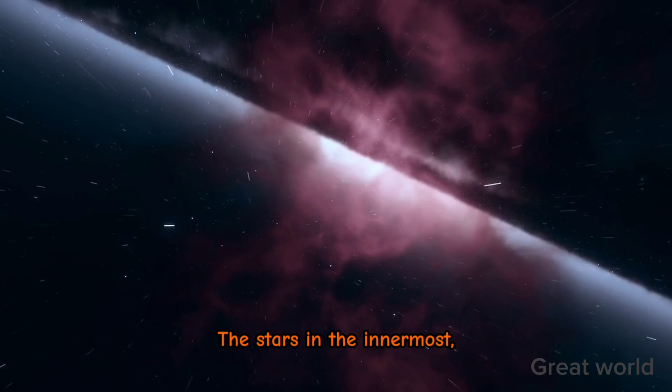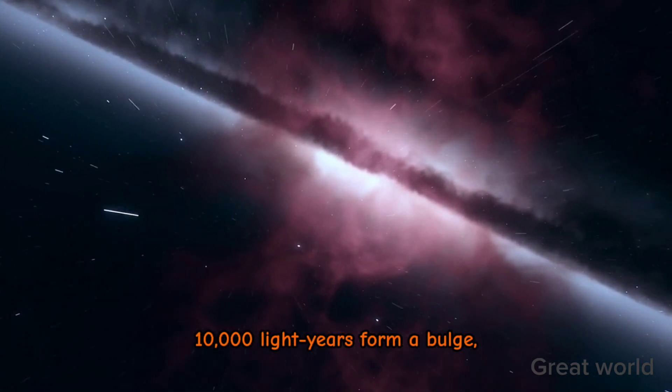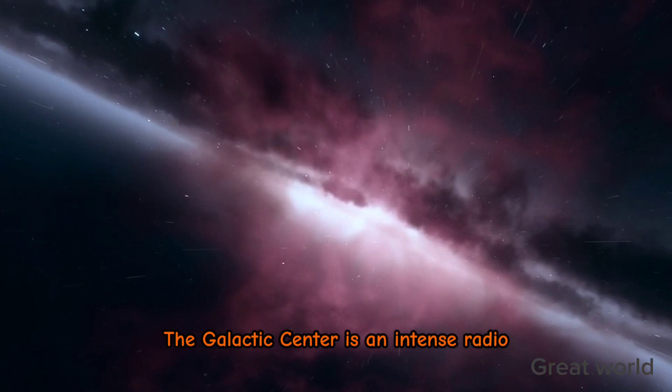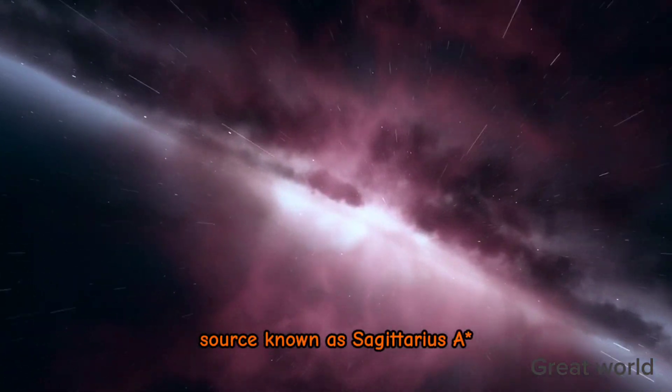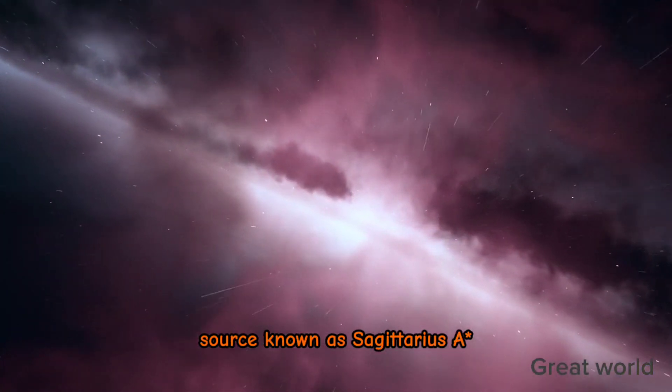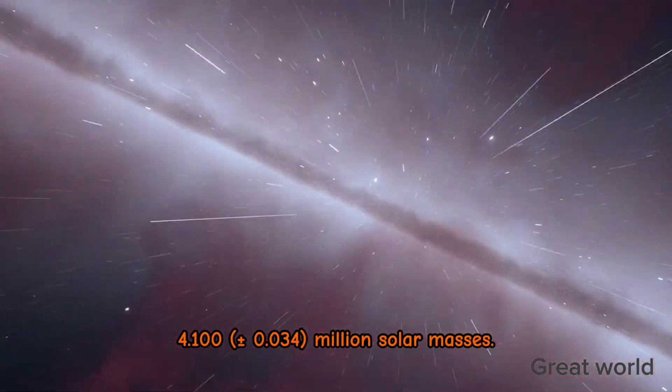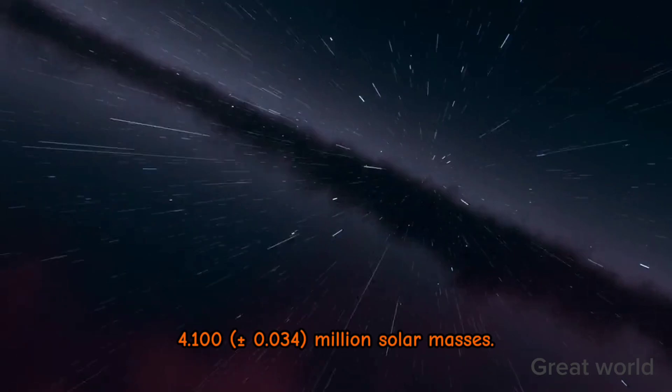The stars in the innermost 10,000 light-years form a bulge and one or more bars that radiate from the bulge. The galactic center is an intense radio source known as Sagittarius A*, a supermassive black hole of 4.100 plus or minus 0.034 million solar masses.